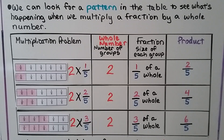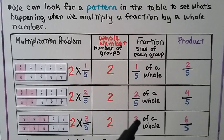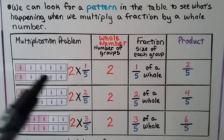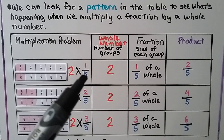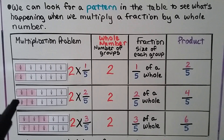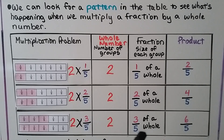We can look for a pattern in the table to see what's happening when we multiply a fraction by a whole number. Here are our multiplication problems — the whole number is the number of groups, the fraction is the size of each group, and then the product. For 2 times 1 fifth, the whole number is 2, the fraction size is 1 fifth, and we have 2 fifths. For 2 times 2 fifths, the whole number is 2, the fraction size is 2 fifths, and we have 4 fifths. For 2 times 3 fifths, the whole number is 2, the fraction size is 3 fifths, and we have 6 fifths.